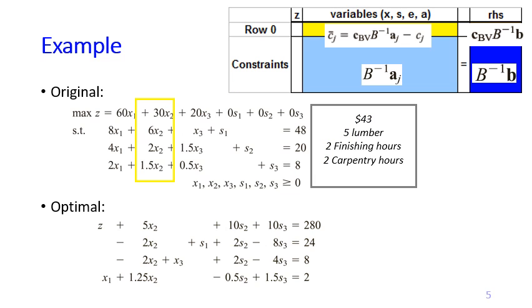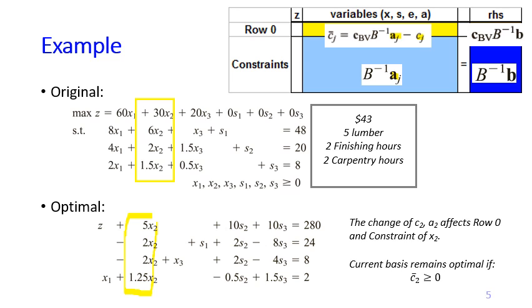If we look at the formula, it means that we make a change in Cj, especially for j equals 2. So we change C2, and then we also change A2. However, because X2 is not a basic variable, it means that CBV does not change. So the change in C2A2 affects row 0 and the constraint of X2. The current basis remains optimal if C2 hat is still greater than or equals to 0 after this change.